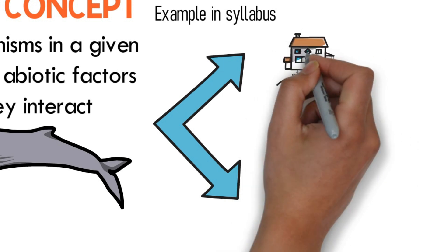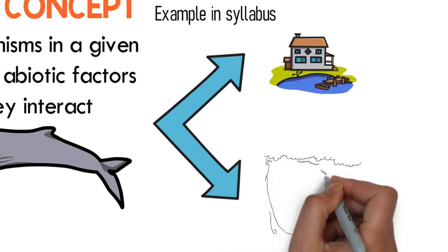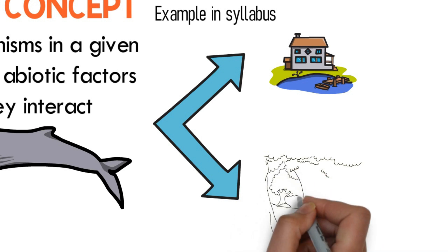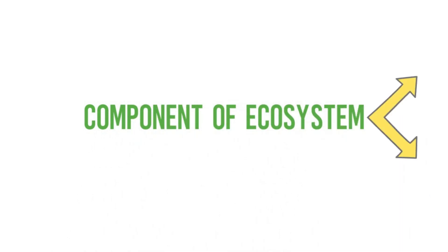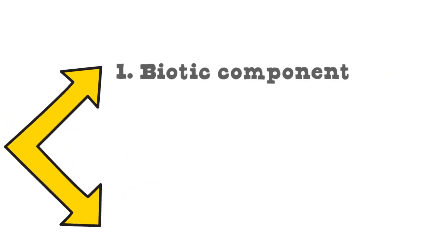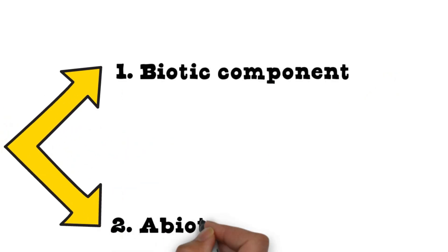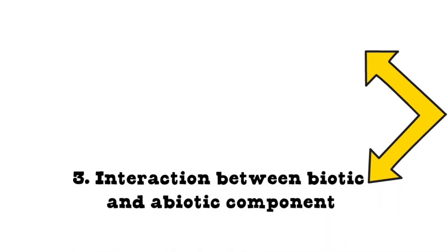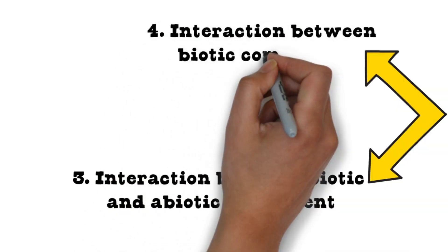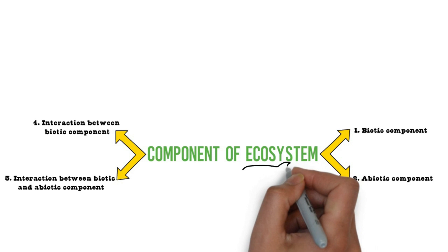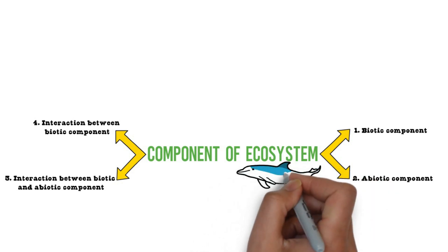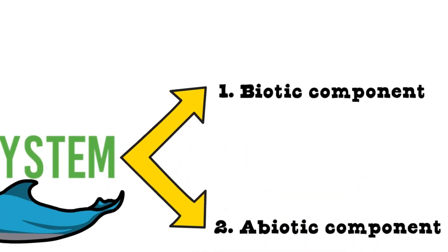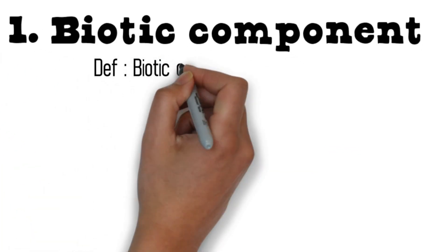Both ecosystem types will be discussed deeply in your tutorial. The components of an ecosystem can be divided into four: the first is the biotic component, the second is the abiotic component, the third is interaction between biotic and abiotic components, and the fourth is interaction between biotic components. In this lecture, we will discuss all four components of the ecosystem deeply.